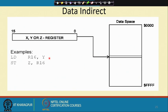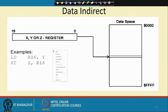Then we have data indirect. There are 3 registers — X, Y, and Z — that can be used for indirect addressing. You can say LD R16, Y, and wherever Y register is pointing to, that location's content will be copied onto R16. Or ST Z, R16 — Z is another pointer, and whatever be the value of R16 will be stored into the memory location pointed to by the Z register.